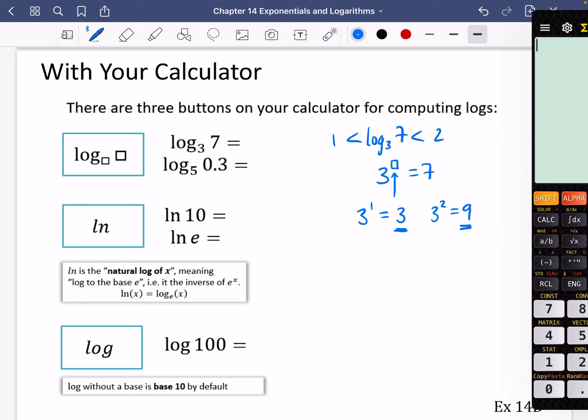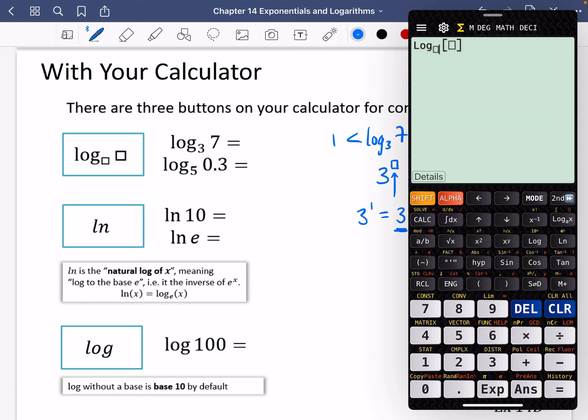So let's actually see what the answer is when we do log base 3 of 7. So I'm going to do this, I'm going to type in there, the base is 3, and I'm going to put the input is 7, and we get that it's 1.77.